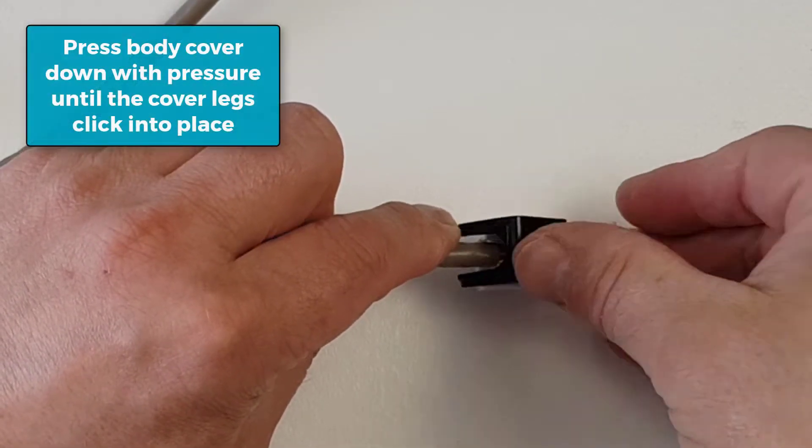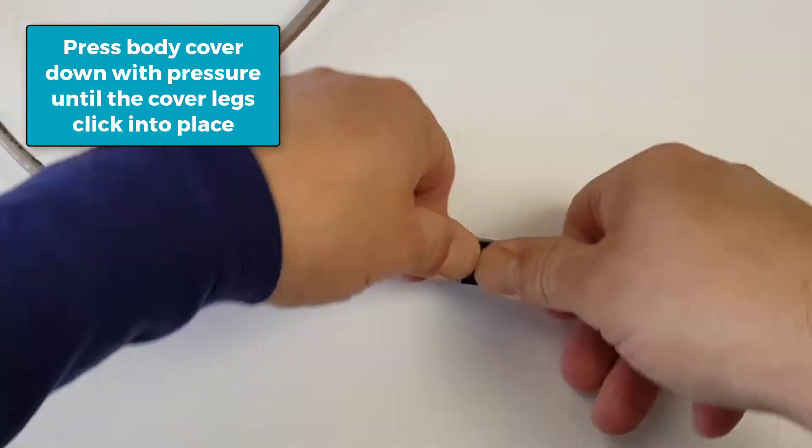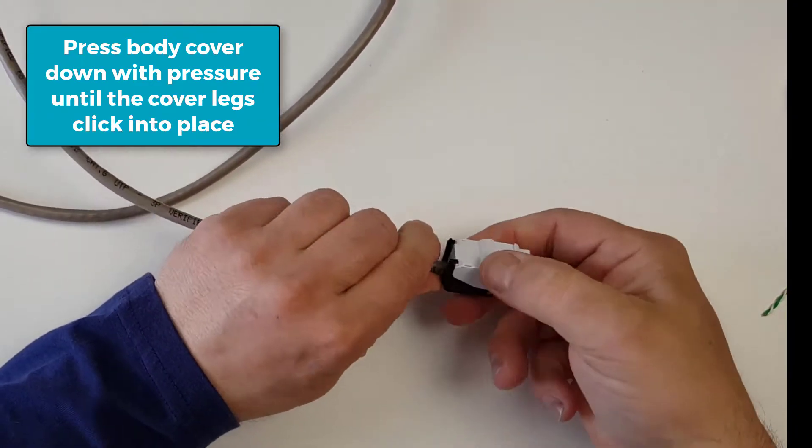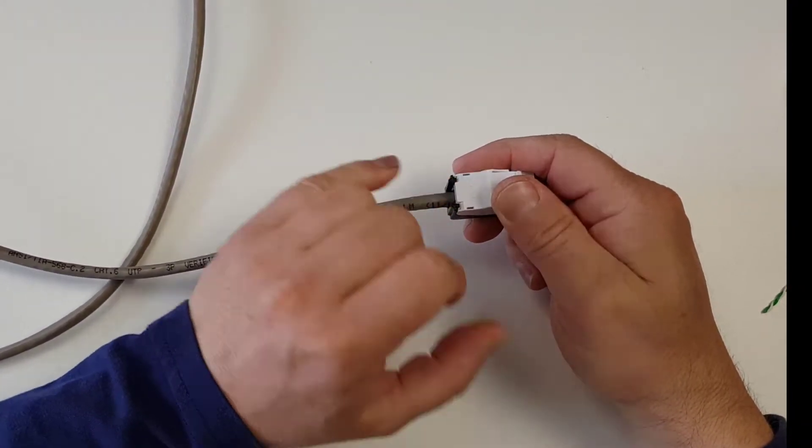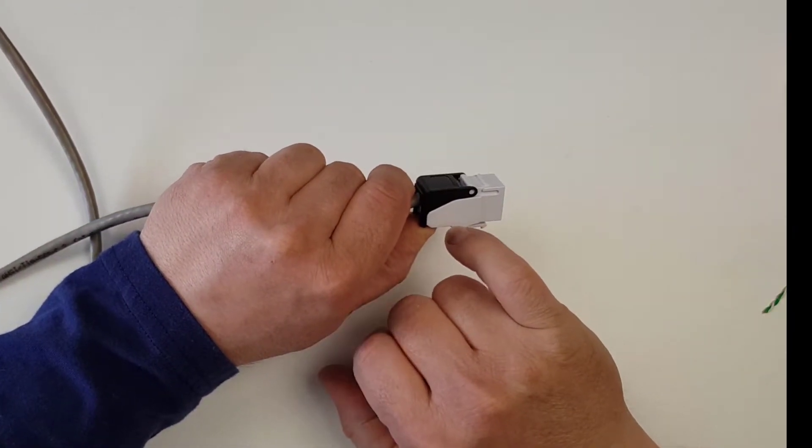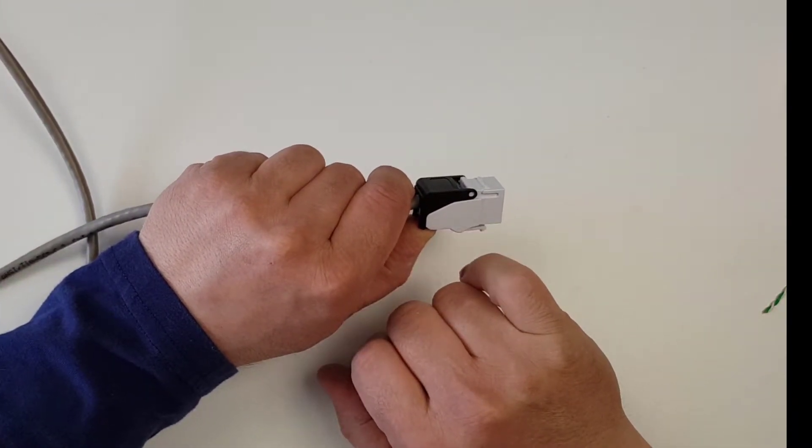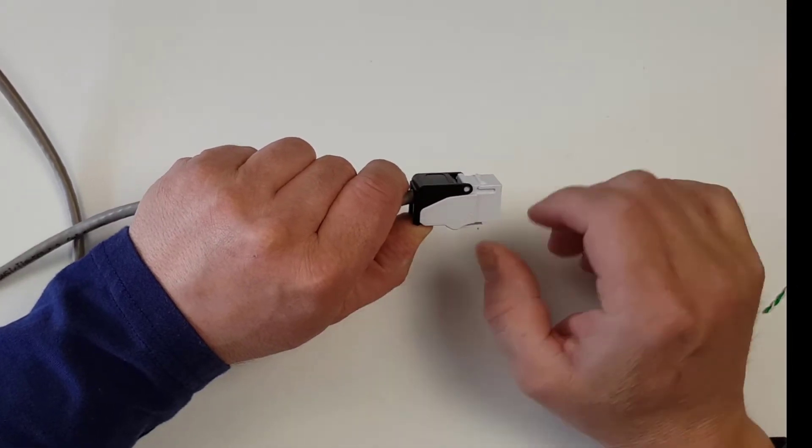Then I take the cover, place it down and just press it into place. Once the back piece locks into place down here, we know that it will have pressed the wires down over the IDCs. They would have split through the insulation and they will be now terminated to the copper wires.